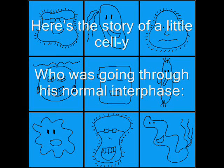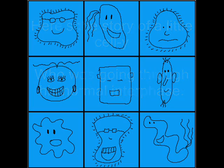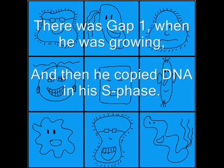Here's a story of a little cell going through his normal interface. There was Gap 1 when he was growing, and then he copied DNA in his S phase.